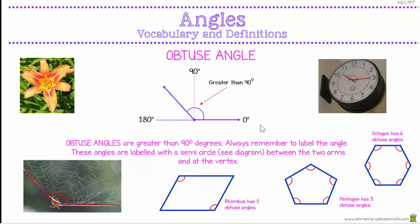The obtuse angle is greater than 90 degrees. We use a circle to show it and place that circle between the two arms at the vertex. Shapes with obtuse angles include the rhombus, which has 2 obtuse angles and 2 acute angles. The pentagon, hexagon, octagon, and nonagon all have obtuse angles. We can also see obtuse and acute angles when we look at a clock. This flower's petals are also growing at an obtuse angle.